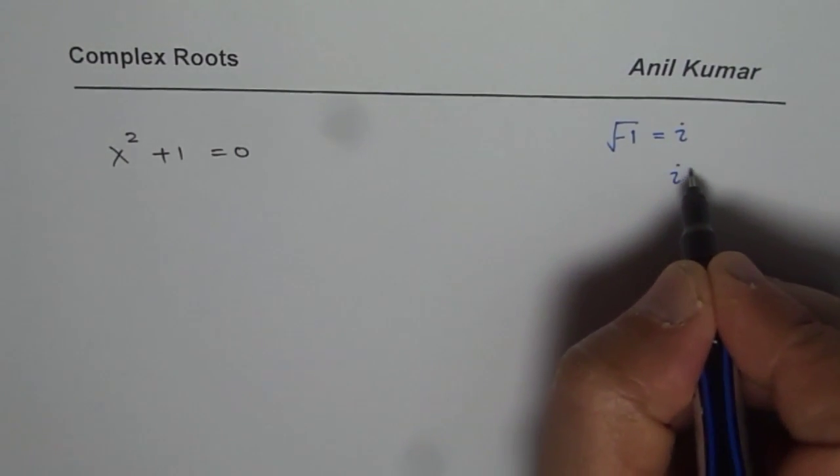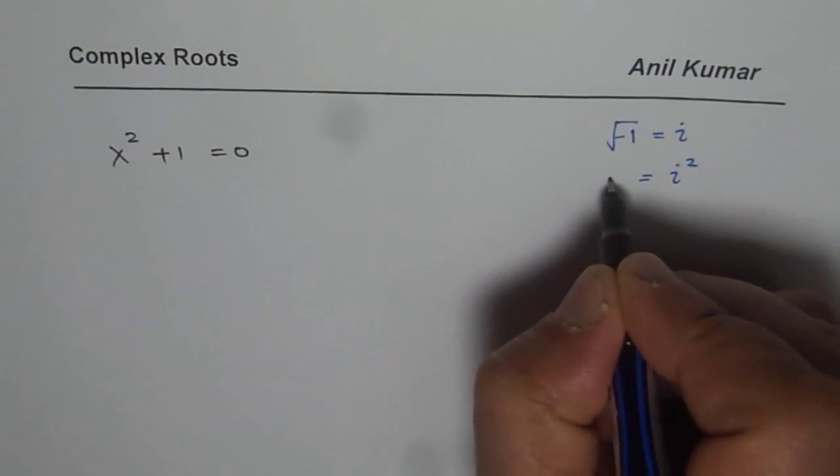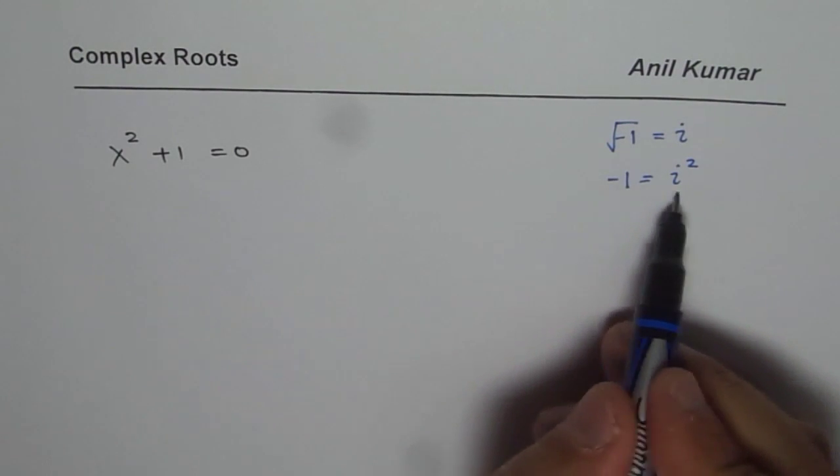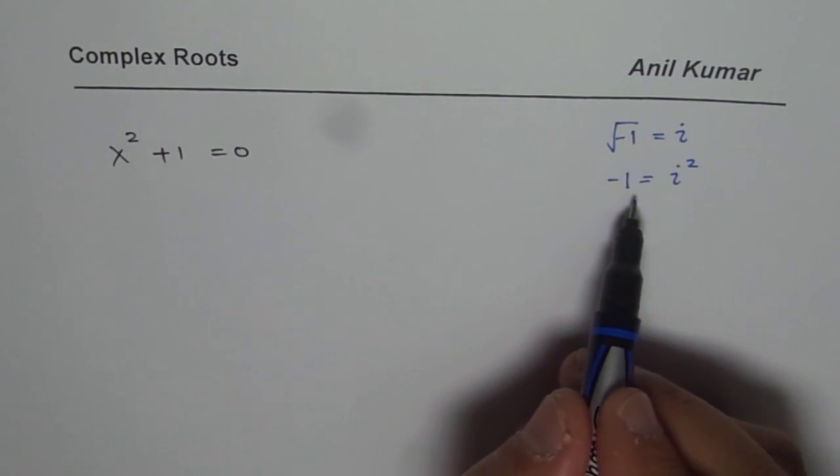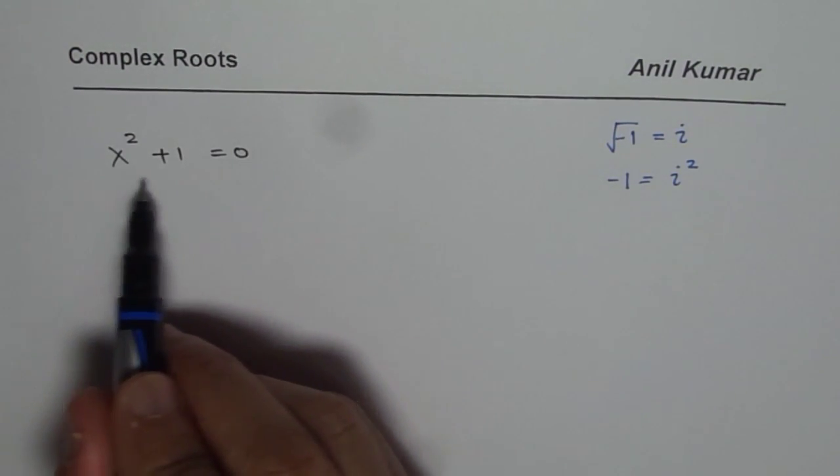Or i is that number whose square is minus 1. Now because of that, we can actually find the roots of quadratic equation even when we do not have any real solution.